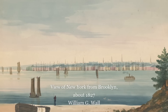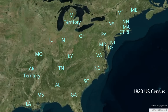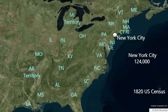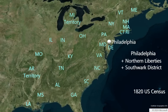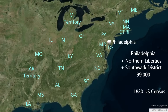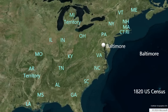The 1820 census is the first in which a city in the United States surpassed 100,000 people — and that city was New York City, the largest city in the nation by far, with 124,000 residents. The second largest city was Philadelphia, Pennsylvania, at 64,000 — however, when the adjacent Northern Liberties Township and Southwark District populations are included, Philadelphia's population increases to 99,000, just under 100,000. Baltimore, Maryland, was the third largest city in the nation at 63,000.